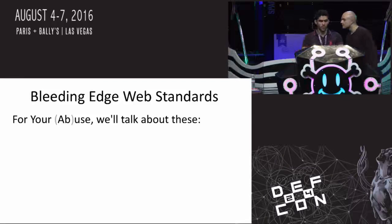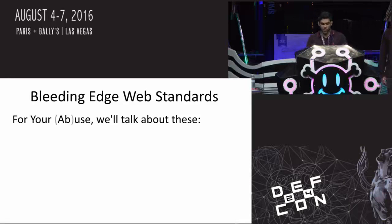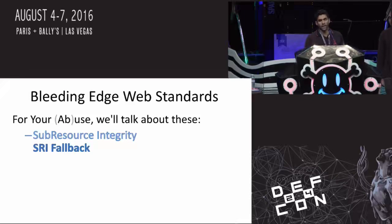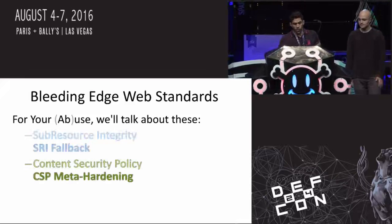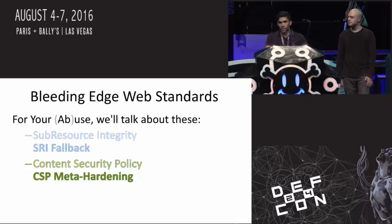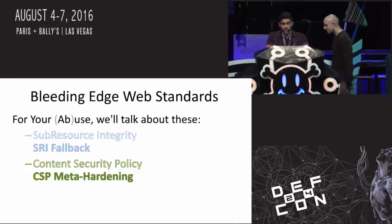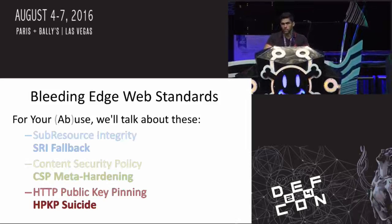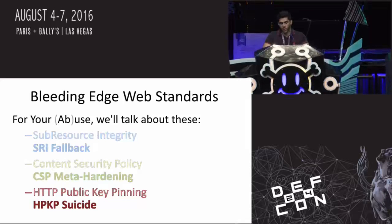We're going to focus on three web standards. First, sub-resource integrity — show of hands who's familiar with SRI. We're going to talk about something we're calling SRI fallback. We'll also touch on content security policy — we're calling our approach CSP meta hardening. And this last one will be about half the talk: HTTP public key pinning, HPKP. The specific thing we'll focus on here is what we're calling HPKP suicide.